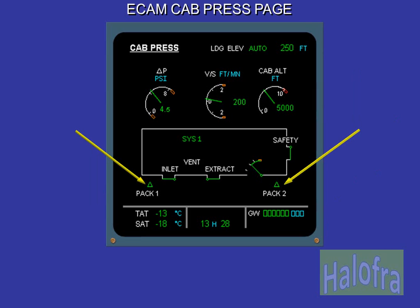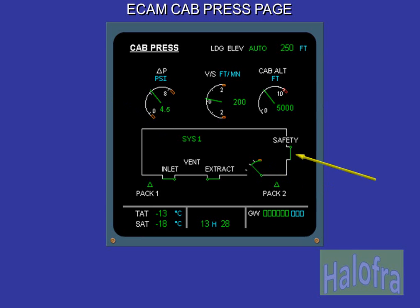Let's look at the information associated with the pressurization system that is presented on the cabin pressure page. The pack indication is displayed green when the associated pack is on. The outflow valve position can be monitored and the system controller in use is shown. There is a single indication for the two safety valves.